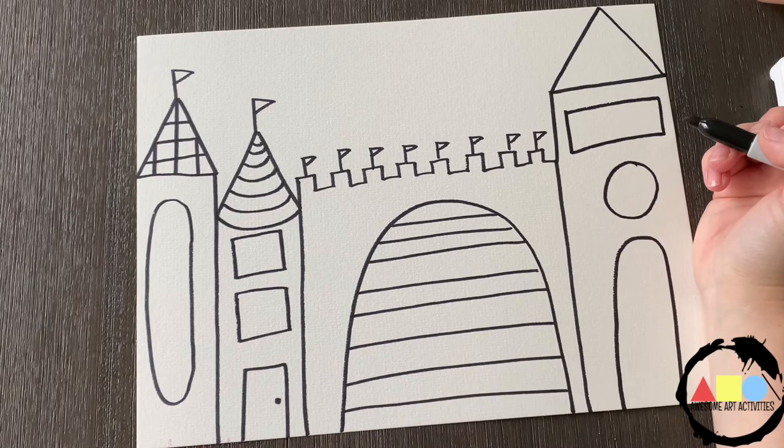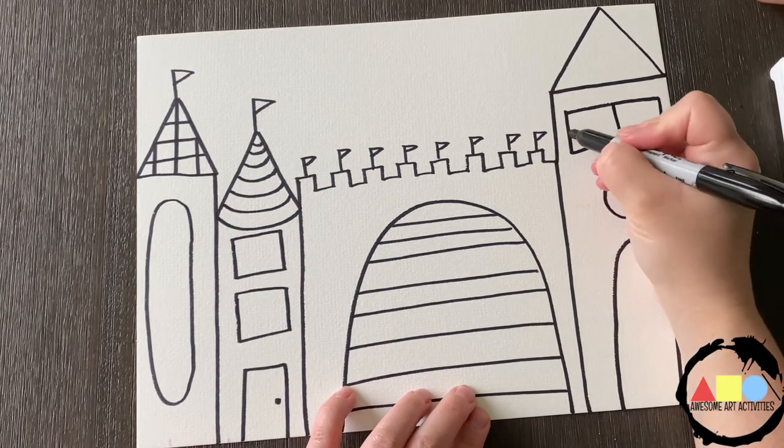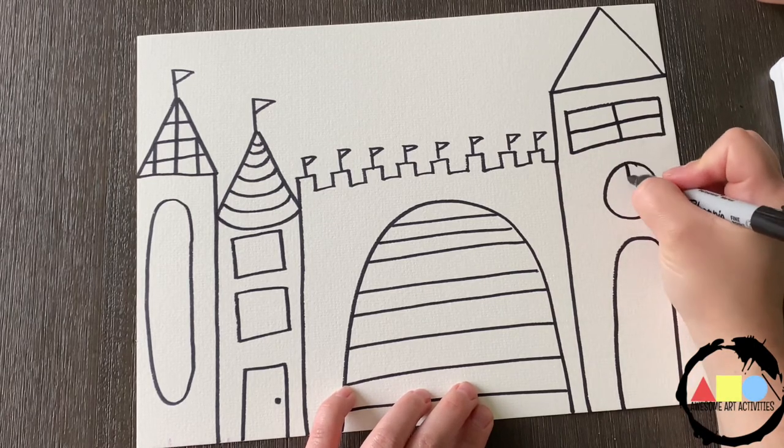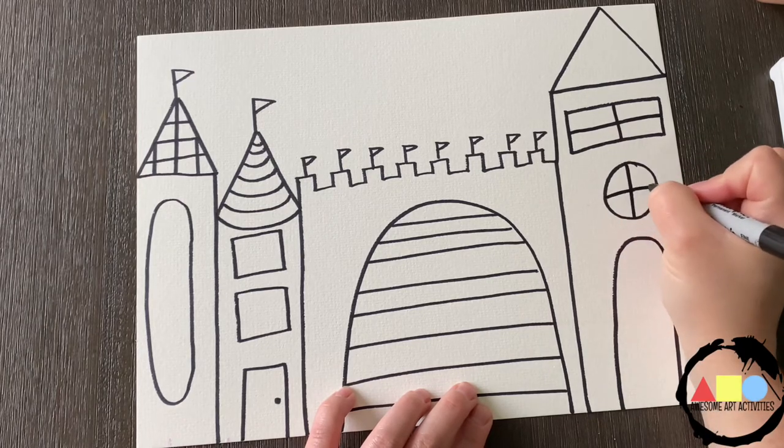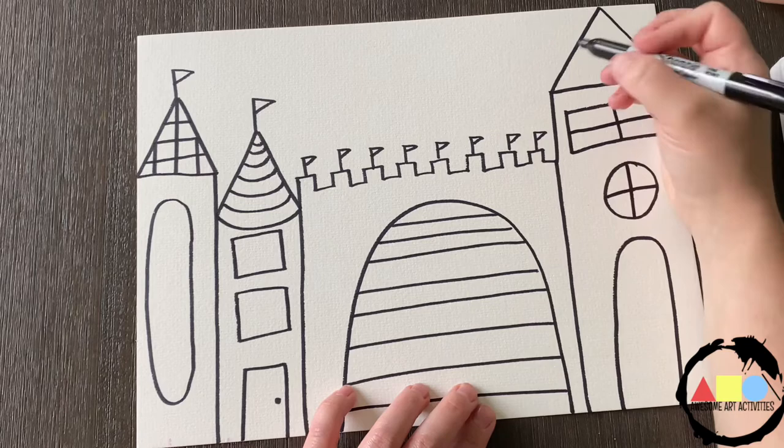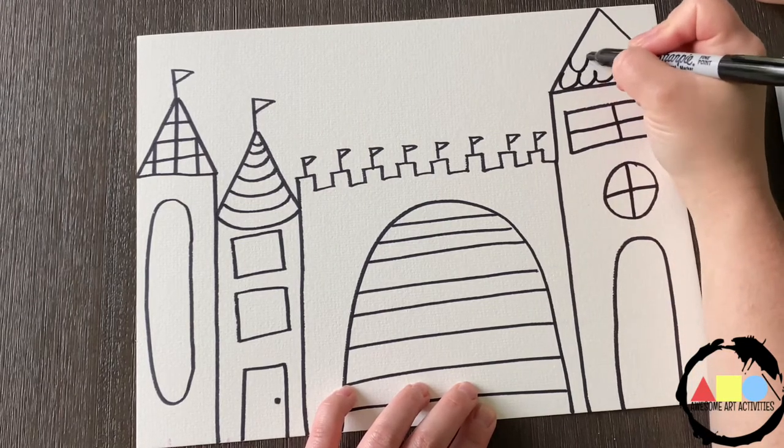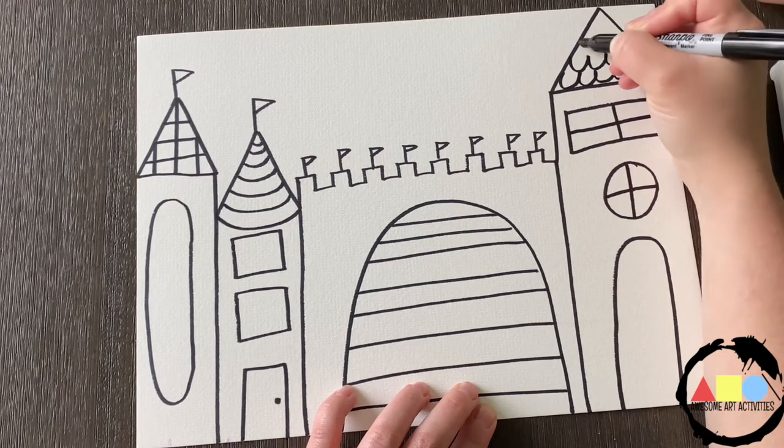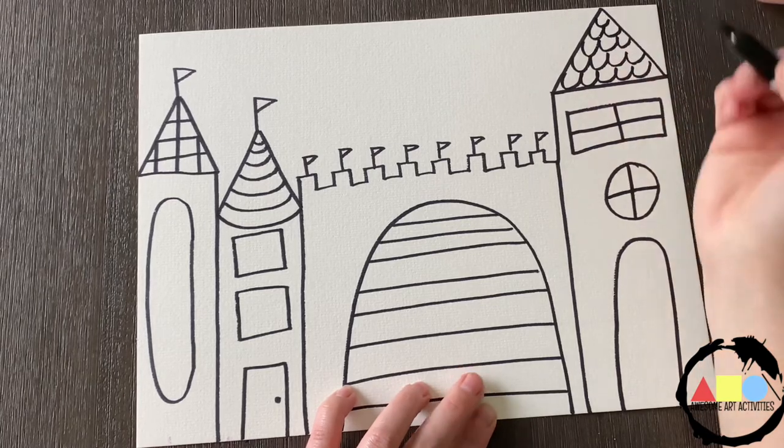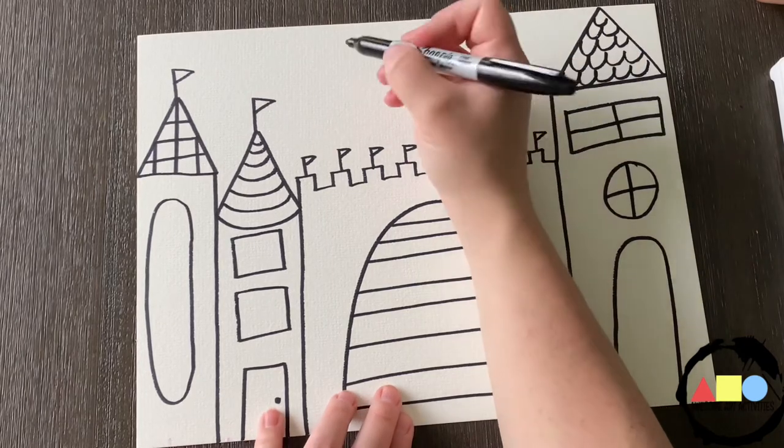Now, it's time to add some extra details. A vertical line and a horizontal line. Then a vertical line and a horizontal line. Inside this roof, I want you to add a scalloped line. So it looks like roof tiles. Now all that we need is a moon or a sun above our castle.